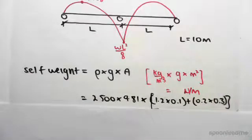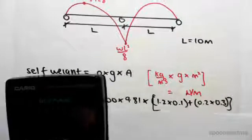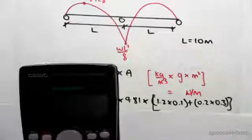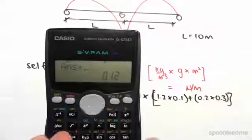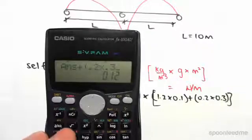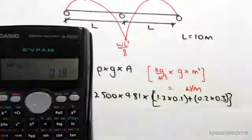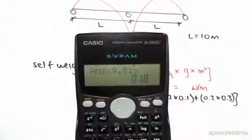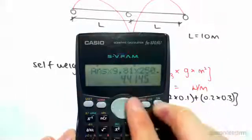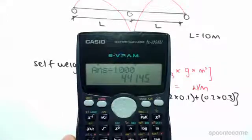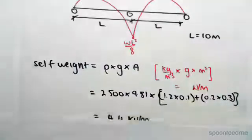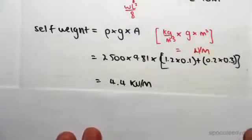So if we work that out: (1.2 × 0.1) + (0.2 × 0.3), times 9.81, times the density of concrete, we get a self-weight of around 4414.5 N/m. Dividing by 1000 to get into kilonewtons per meter, we get 4.4 kN/m — that's the self-weight of the structure.